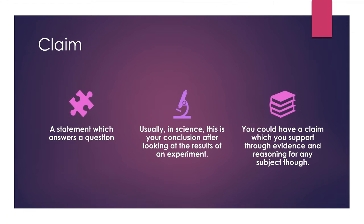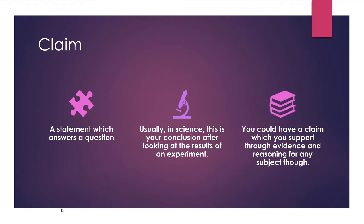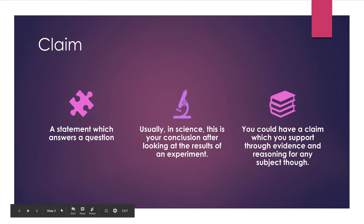A claim is a statement which answers a question. In science, this is going to be a conclusion that you make after doing an experiment. If we're just looking at some sort of problem, I might give you a problem in which you see a bunch of data, you hear about what's going on, and you try to come up with some sort of conclusions from looking at that data and reading about the scenario. This applies to anything — you can make a claim about something from literature, you can make a claim about a figure from history. You can do all sorts of things with this sort of reasoning.